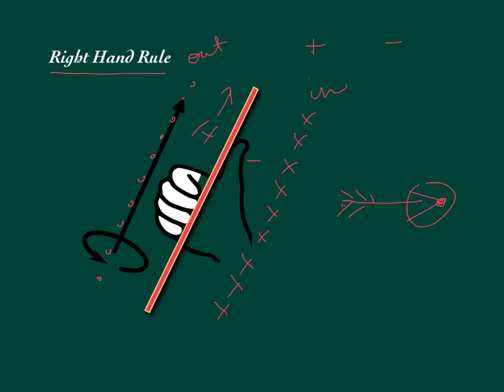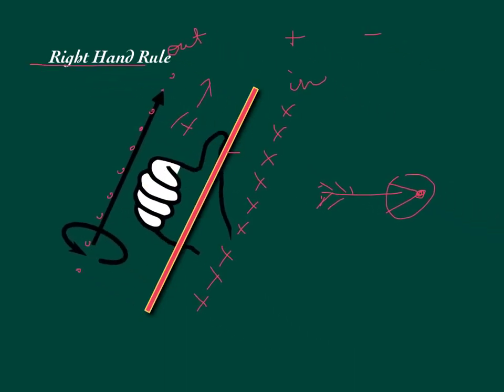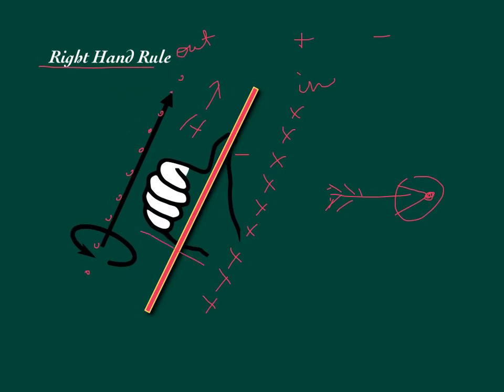If we look along the top — actually put your hand up, put your thumb going up, and curl your fingers around — you'll see that on the top your fingers are pointing down and to the right. So on the top, our magnetic field is going in that direction, and on the bottom it's going the opposite direction. That's one use of the right-hand rule: figuring out which direction your magnetic field is.